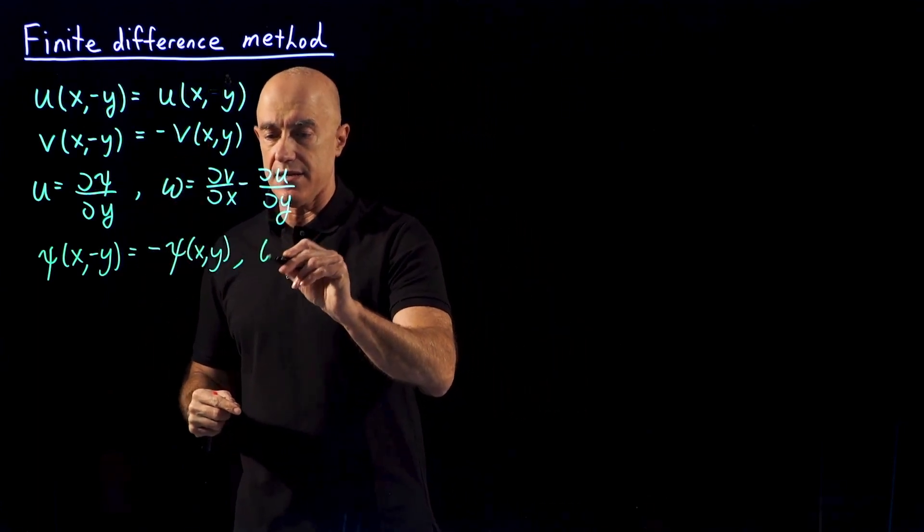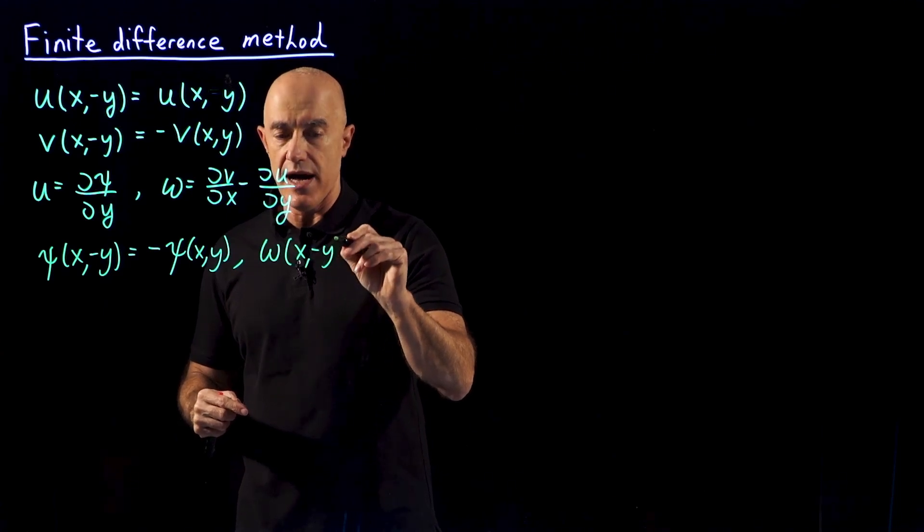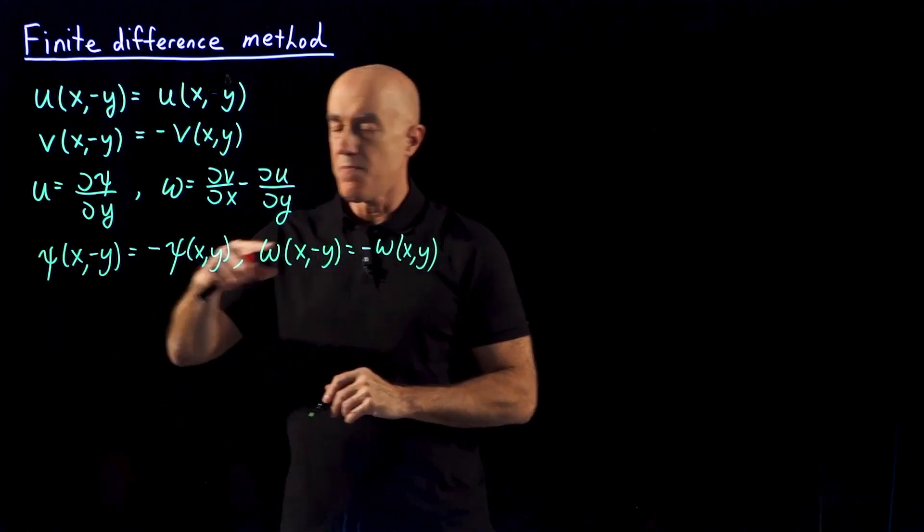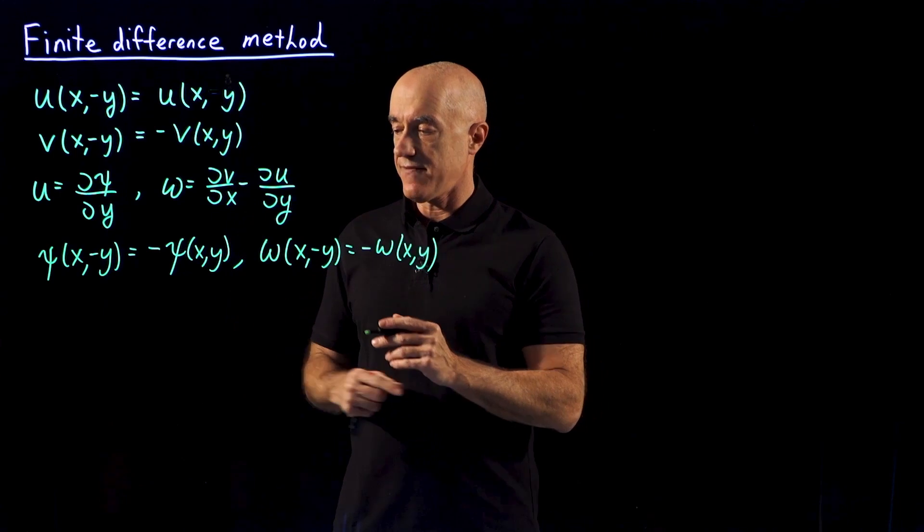So ω is an odd function in y. So ω(x,-y) equals -ω(x,y). So both the stream function and the vorticity are odd functions.